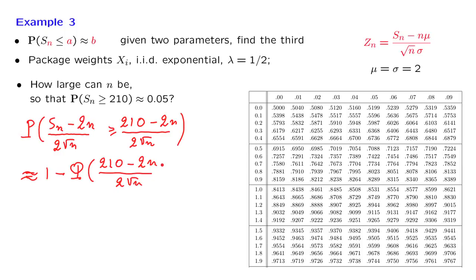Now we want this quantity to be approximately equal to 0.05, which once more means that this quantity should be 0.95. And arguing as before, we try to find 0.95 in the standard normal table. And this tells us that the argument of the normal CDF should be equal to 1.645.